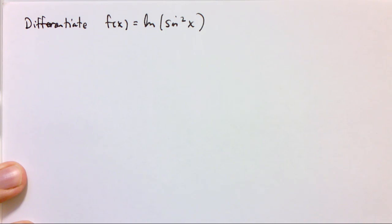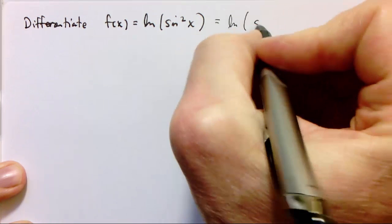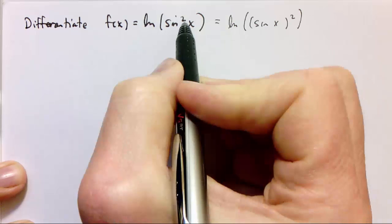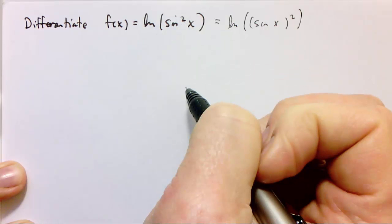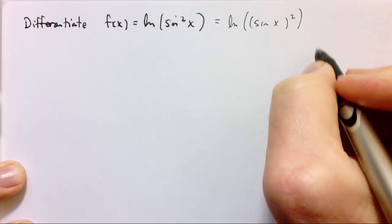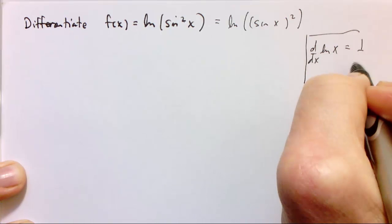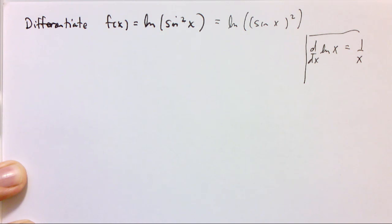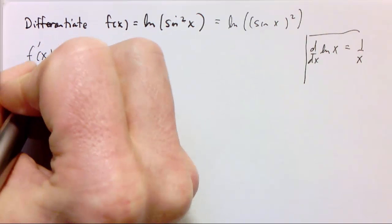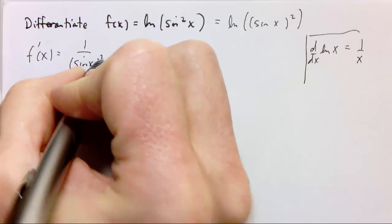We can combine the derivative of logarithms with the chain rule. Consider the natural log of sine squared of x. We saw that the derivative of the natural log of something is 1 over that something. Here we have to use the chain rule: f prime of x equals 1 over that stuff times the derivative of the inside.